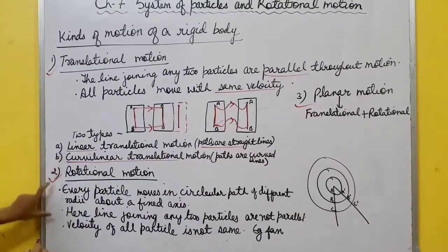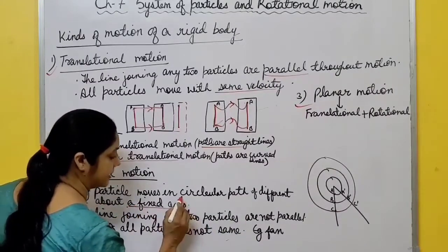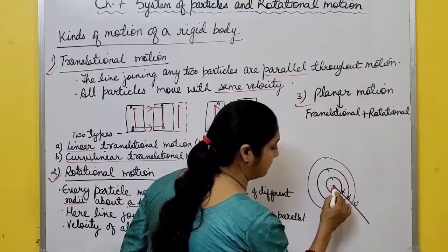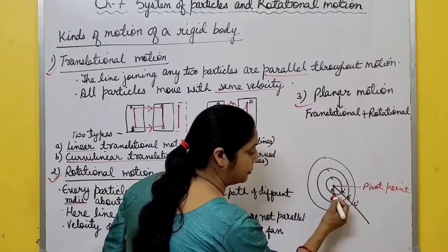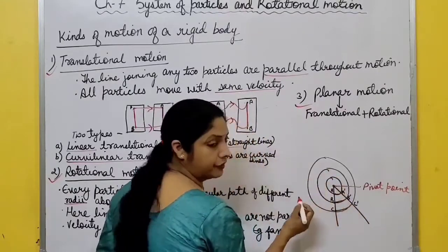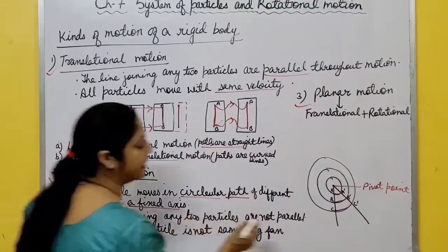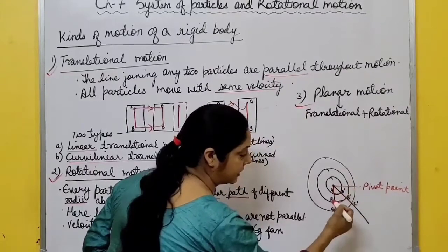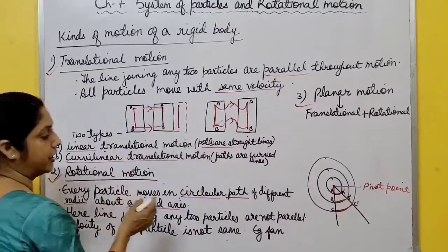Next is rotational motion. In translational motion every particle moves with the same velocity, but in rotational motion every particle moves in a circular path of different radii about a fixed axis. Suppose there is a pivot point - like a table fan or wheels of a bus. All particles A, B, C move in circular paths about this fixed axis. This type of motion is called rotational motion.